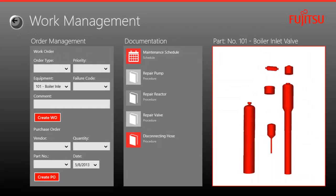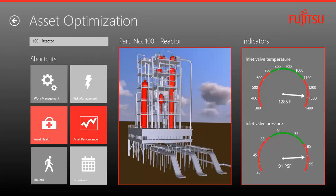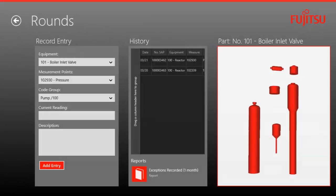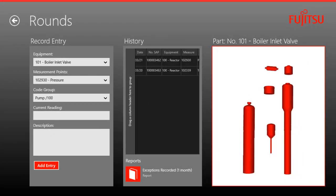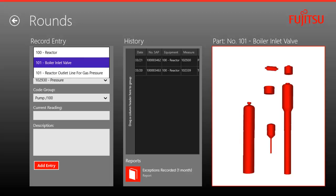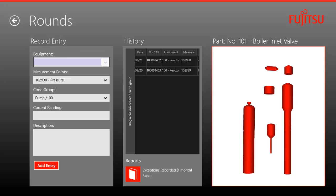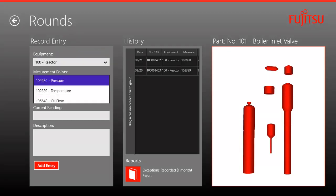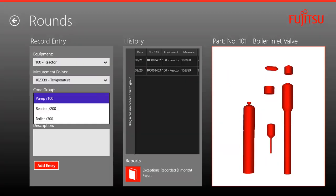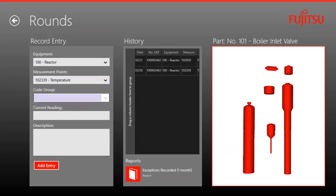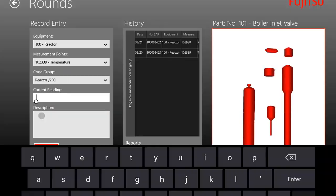The rounds tile allows the shift supervisor to record pertinent information about refinery assets in real time during their shift walkthrough. They can select the equipment, measurement, and code group, and add that entry to a running history of exceptions.